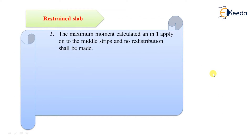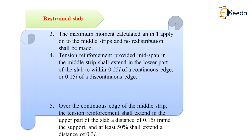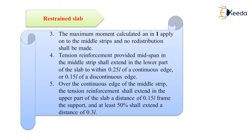The maximum moments calculated — MUX and MUY — apply on the middle strips, and no redistribution shall be made. Tension reinforcement provided at mid-span in the middle strip shall extend in the lower part of the slab for 0.15L of a discontinuous edge. Over the continuous edge of the middle strip, tension reinforcement shall extend in the upper part of the slab at a distance of 0.15L from the support, and at least 50% shall extend to 0.3L.